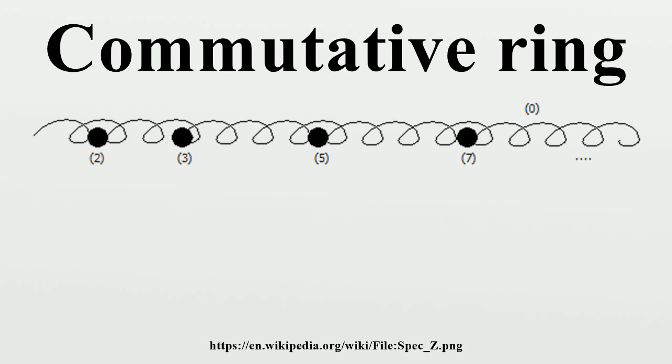A ring is a set R equipped with two binary operations, operations combining any two elements of the ring to a third. They are called addition and multiplication and commonly denoted by plus and times. To form a ring these two operations have to satisfy a number of properties. The ring has to be an abelian group under addition as well as a monoid under multiplication, where multiplication distributes over addition. If the multiplication is commutative, then the ring R is called commutative.